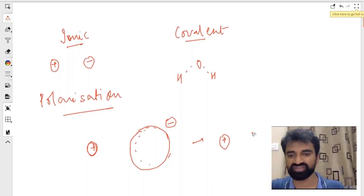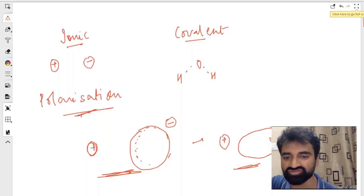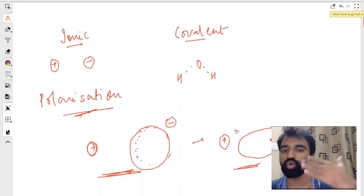This is what we call polarization. This is a strictly ionic bond; this is what we call a polarized bond. These electrons which were supposed to be with one atom now lie somewhere in between. This is one atom, this is the other atom, and there are electrons which lie somewhere in between. This is what we call covalent characteristic of an ionic bond.